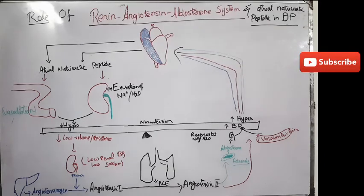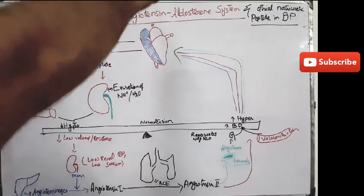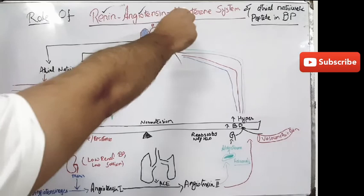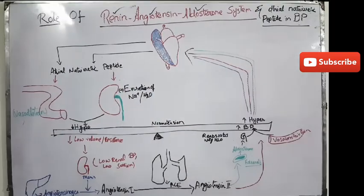Assalamu alaikum. In this video we will discuss the role of renin-angiotensin-aldosterone system as well as atrial natriuretic peptide in maintenance of blood pressure.